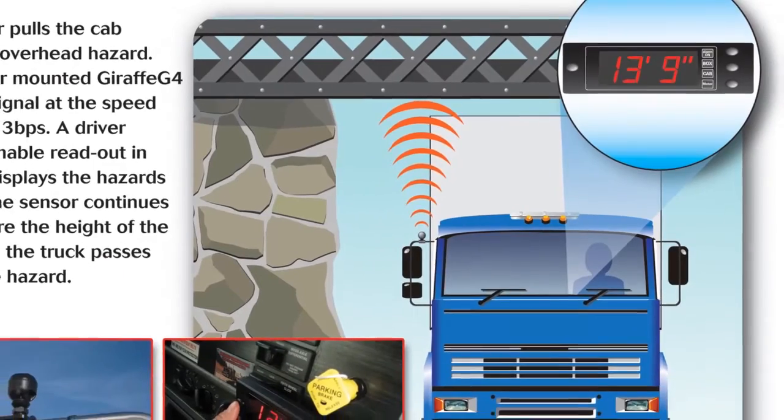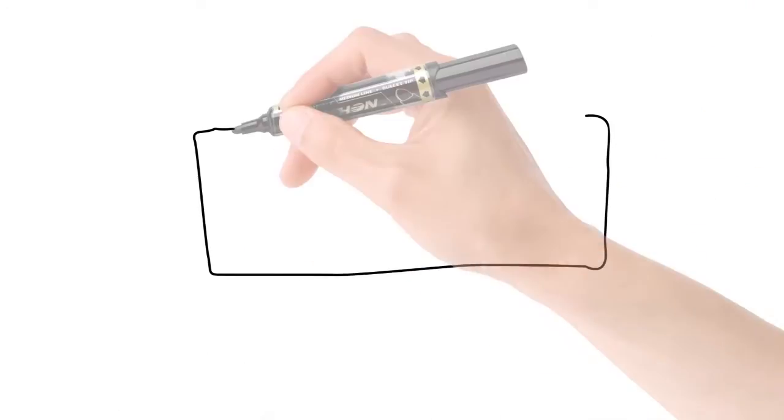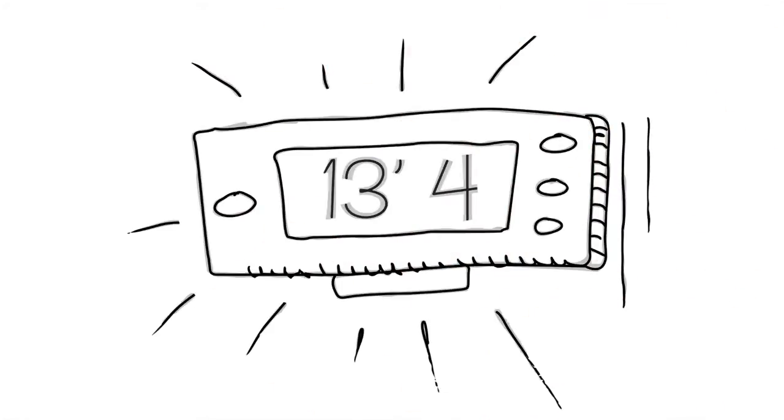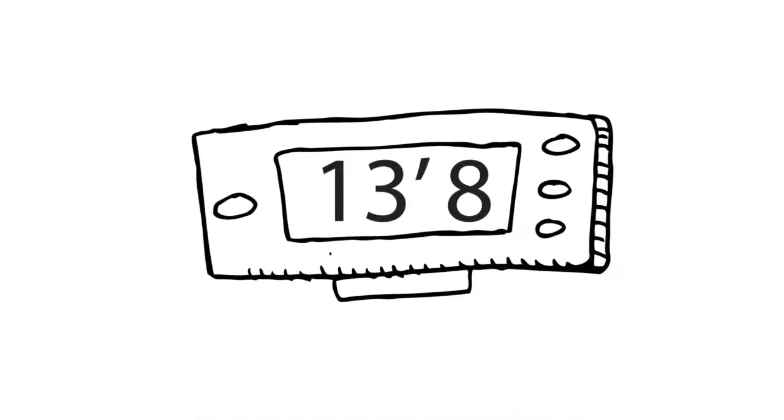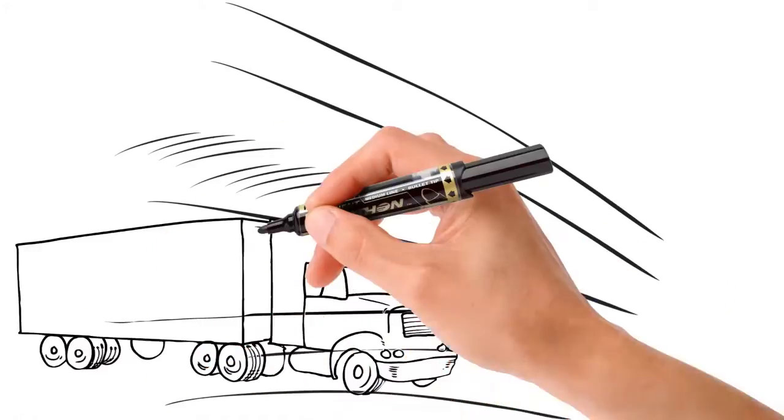The signal is so fast it refreshes itself four times a second. If the height of the obstacle is lower than what is programmed in the unit, it will flash and beep and let you know that there is no clearance. If the measured height is higher, you're safe to go. The Giraffe G4 will continue measuring as the truck passes under the bridge.